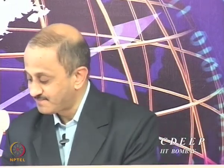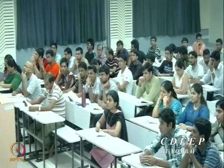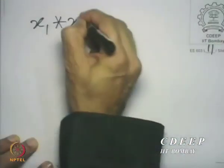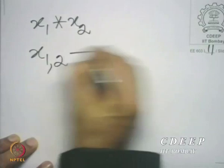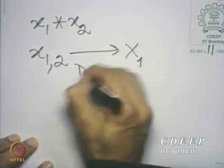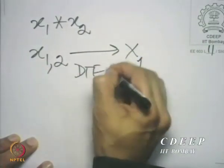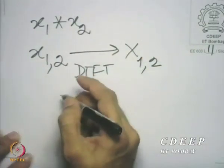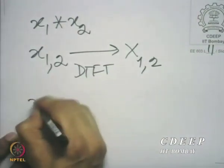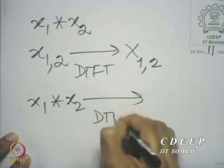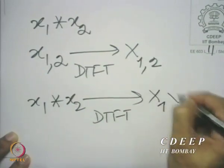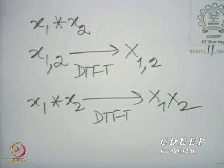We showed that if x1 is convolved with x2, and if x1 and x2 respectively have the DTFTs capital X1 and capital X2, then x1 convolved with x2 has the DTFT X1 times X2. That is what we proved the last time.